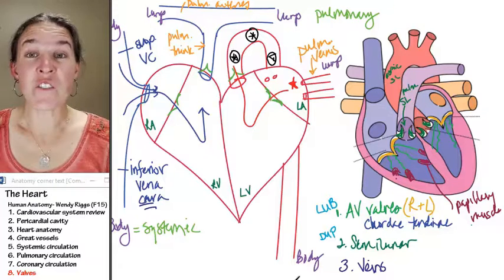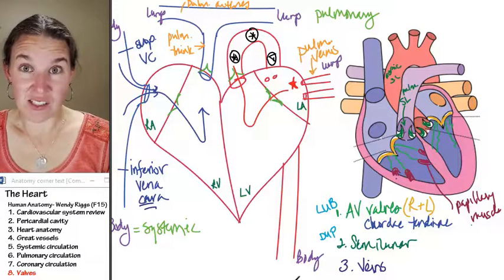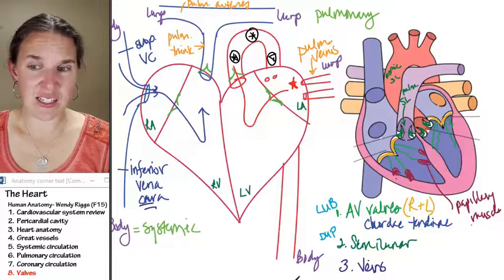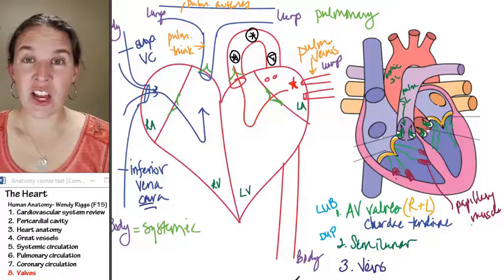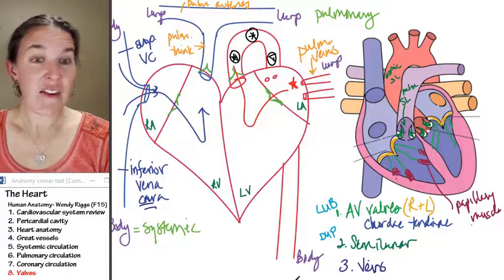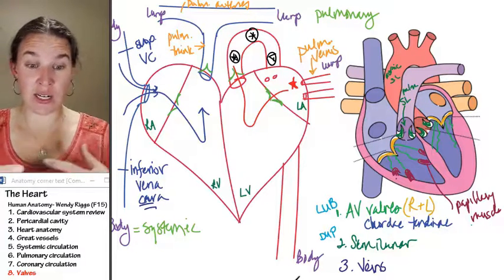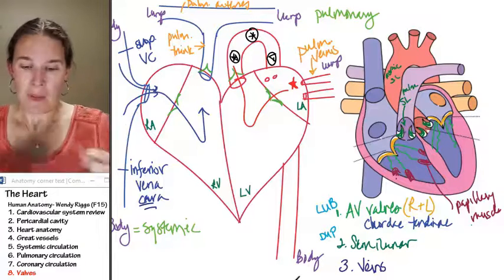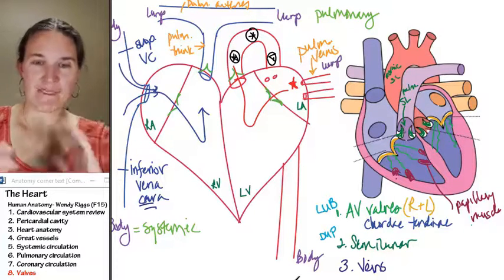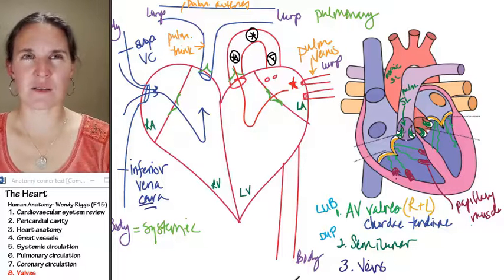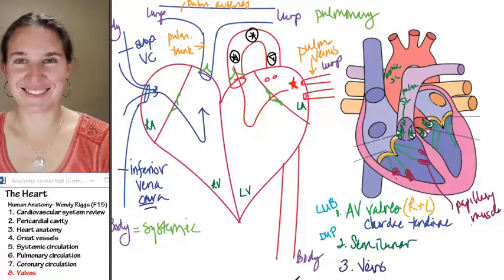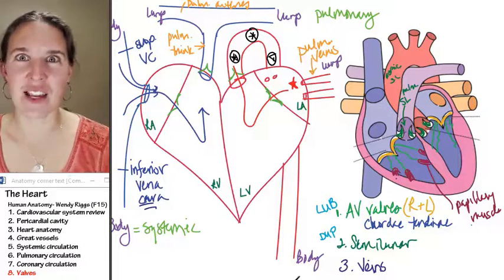If your venous valves start to get floppy or break down, you can get varicose veins. Varicose veins are just kind of blown out and expanded vessels, veins, because the valves in your veins aren't working.